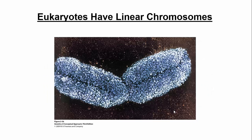Let's turn our attention to eukaryotic chromosomes, which is really what I want to focus on in today's lecture. Eukaryotes have linear chromosomes — it's linear, not circular. Though the ends of our chromosomes are circular, which is something interesting we're going to talk about a little bit later on.